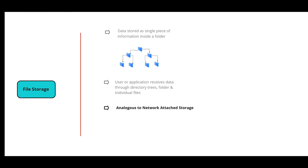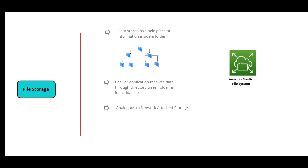NFS protocol is used for accessing files stored in NAS shares. Amazon Elastic File System, or EFS, is the AWS service for storing and sharing files in the cloud based on file storage. EFS can be mounted on multiple servers at the same time and can also be mounted to on-premise servers over VPN or Direct Connect. It's a network file system for Linux-based workloads.